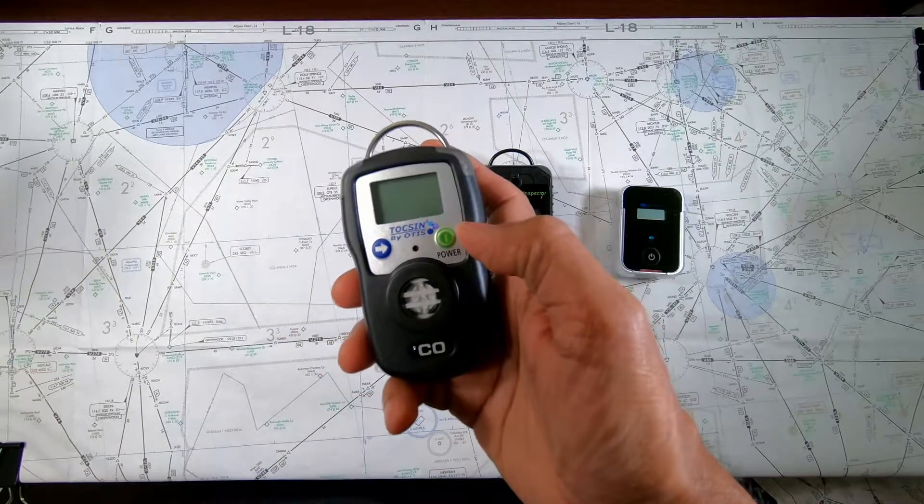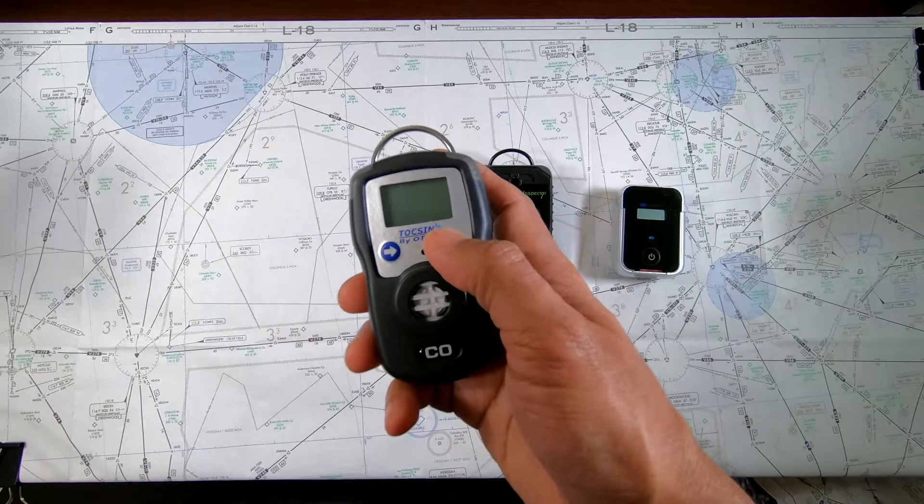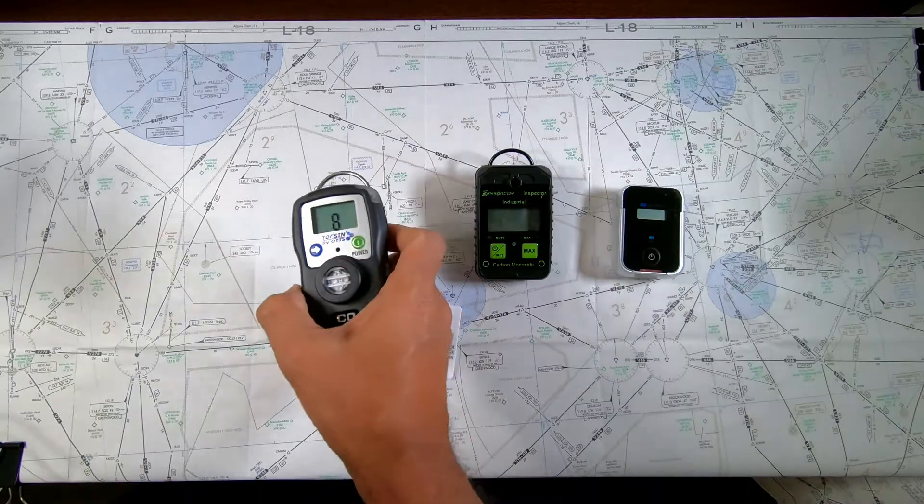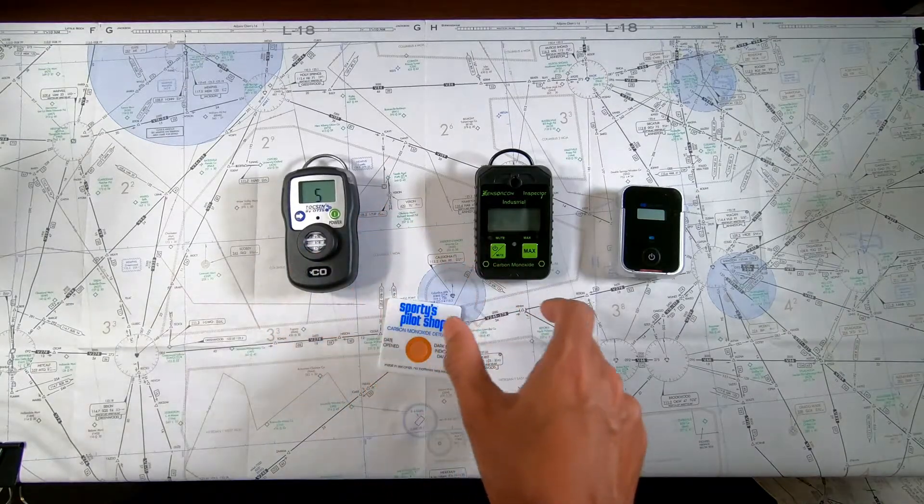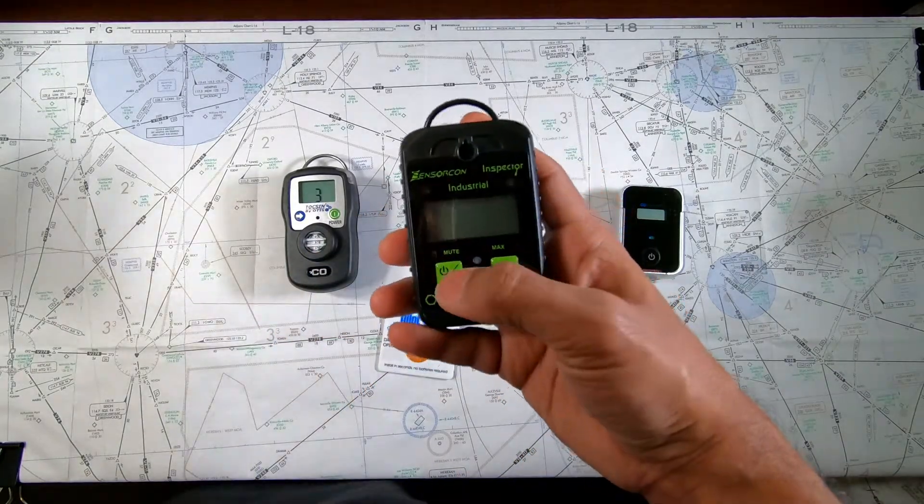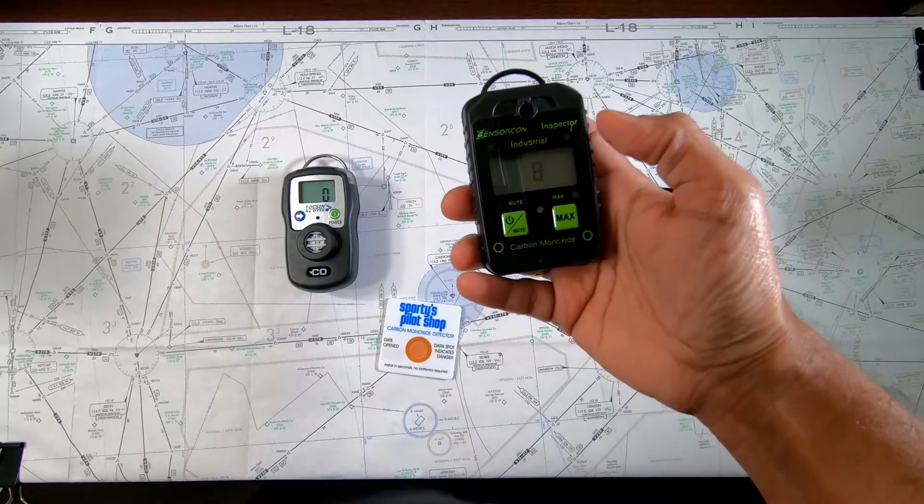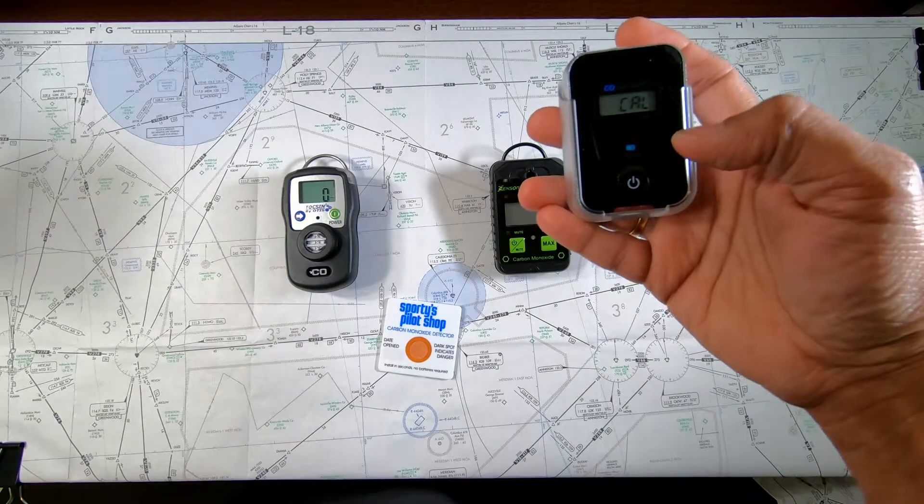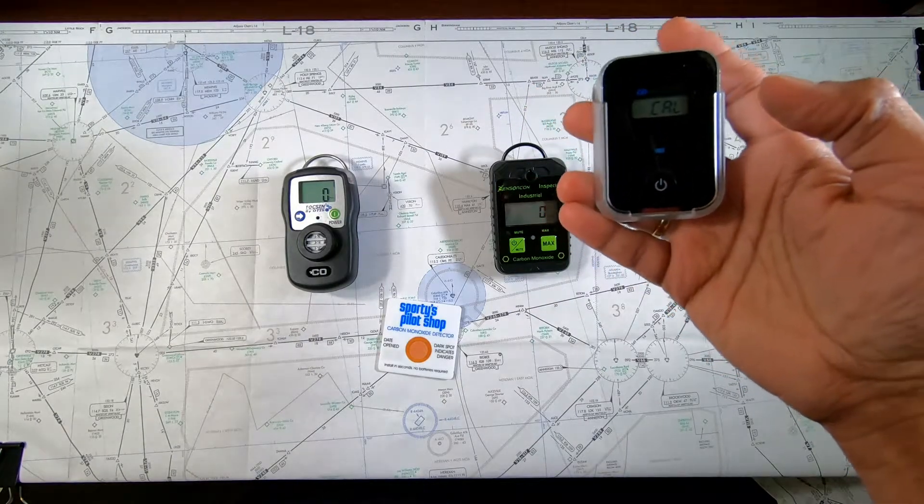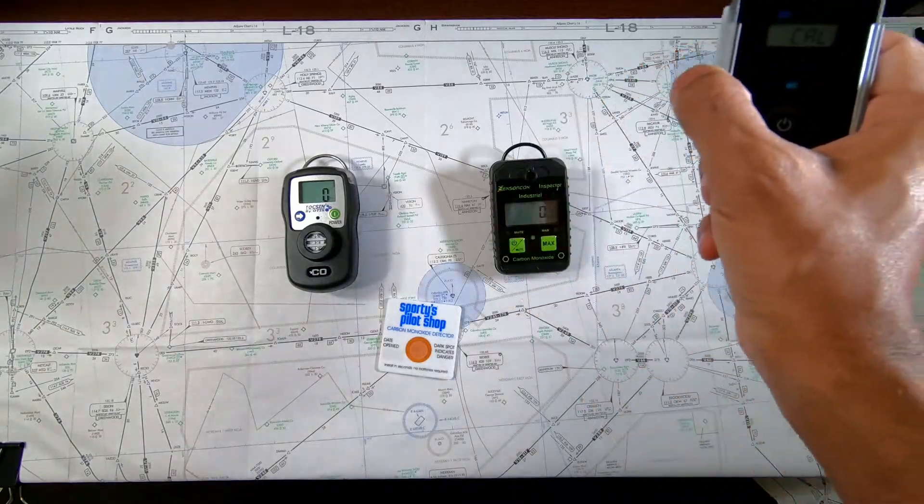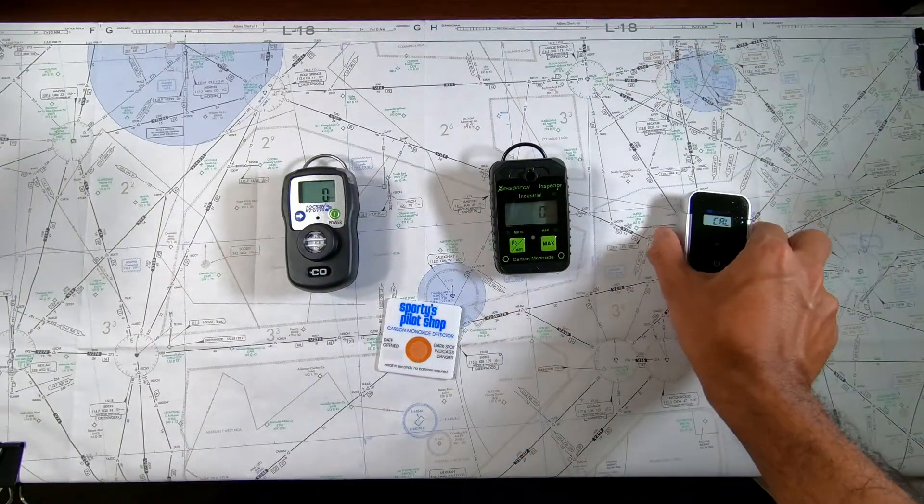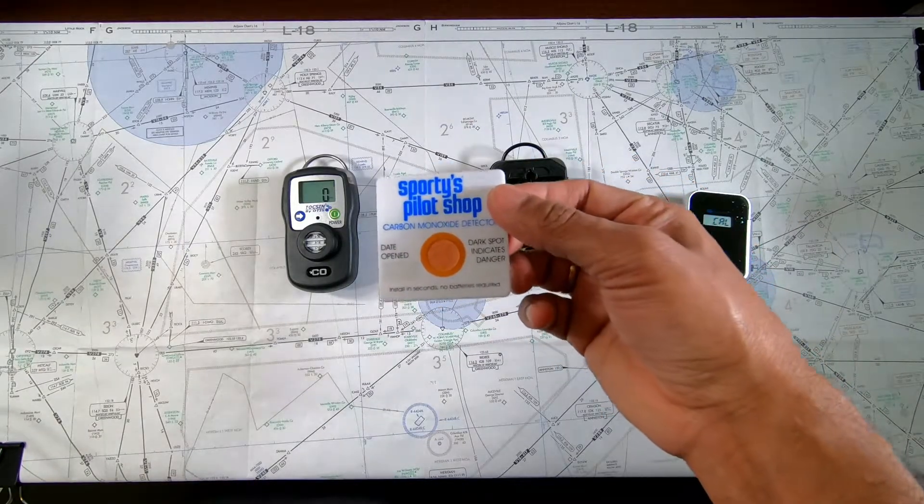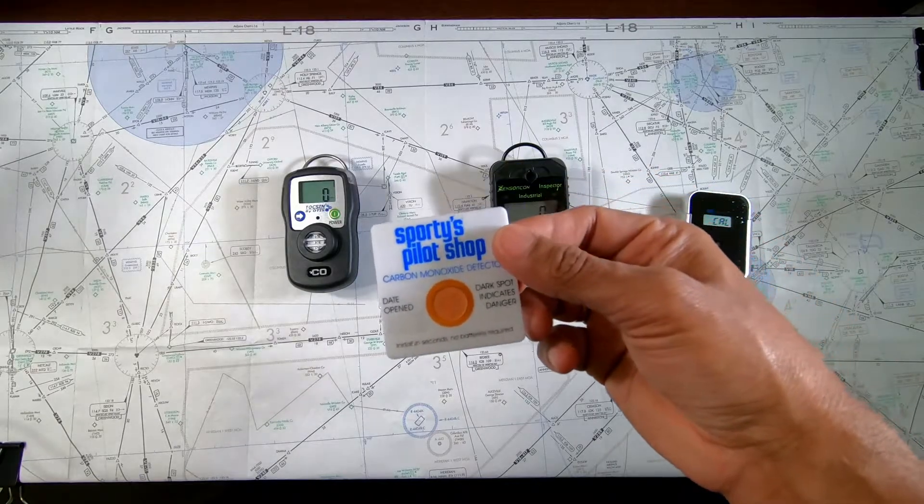So the first one that I have here is a Tocsin 3 by Aerox. I bought this on the Aerox website. This is primarily designed to be used in the cockpit. Additionally, I bought this SensorCon industrial sensor on Amazon. And as a third detector, I bought this aircraft and vehicle carbon monoxide detector by Forensics. This is the cheapest among these three units. I also figured I might as well want to test this patch that you can get from Sporty's website or some other website.